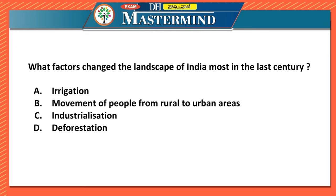The second question: what factors changed the landscape of India most in the last century? The question implies most options may be true but asks which is most correct. Options are: irrigation, movement of people from rural to urban areas, industrialization, or deforestation. You can straight away eliminate deforestation using aptitude.